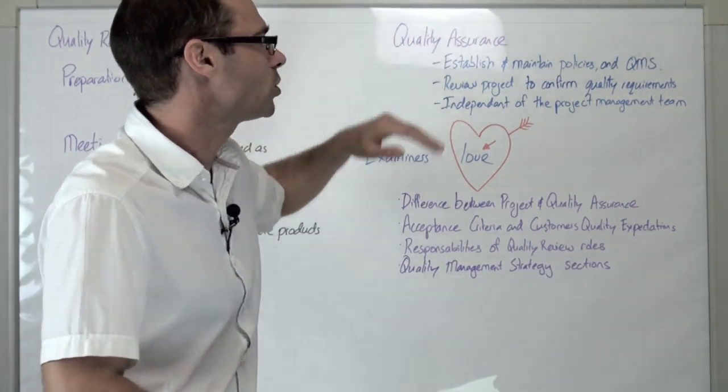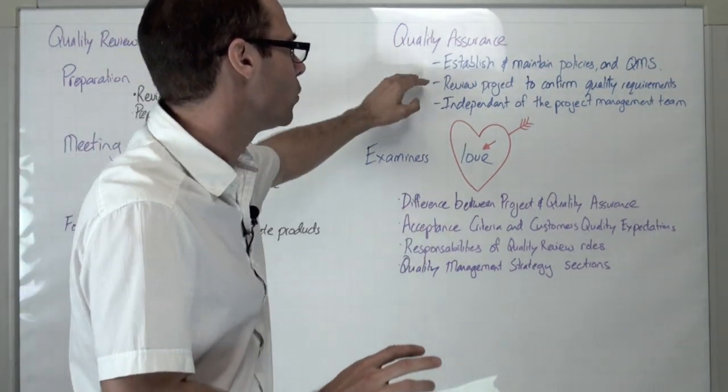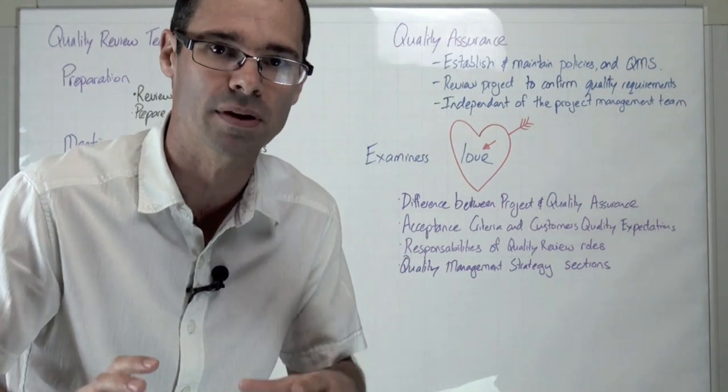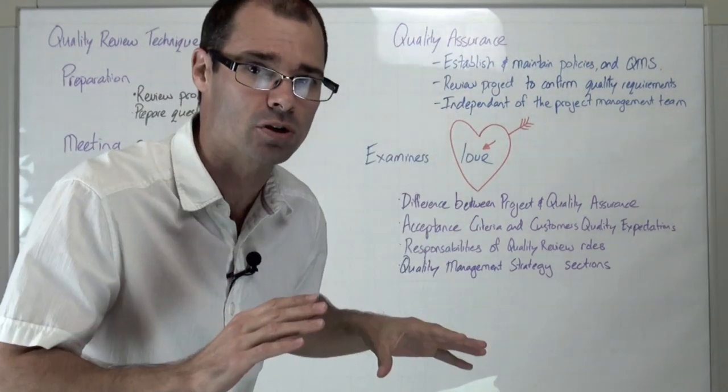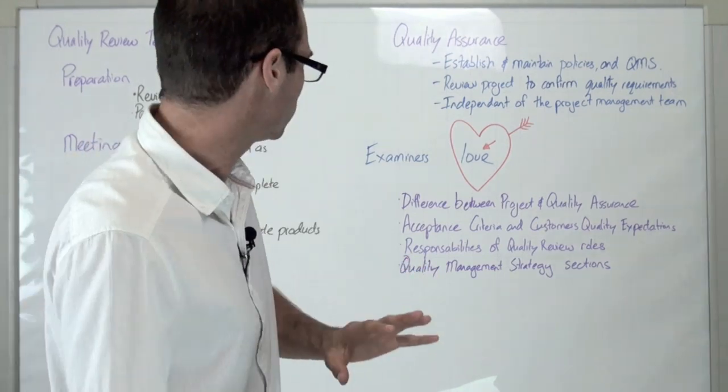Quality assurance is about establishing and maintaining the policies and the quality management system. It's about reviewing the project to confirm the quality requirements, and it's independent of the project management team. It often comes from corporate program management outside of the project.